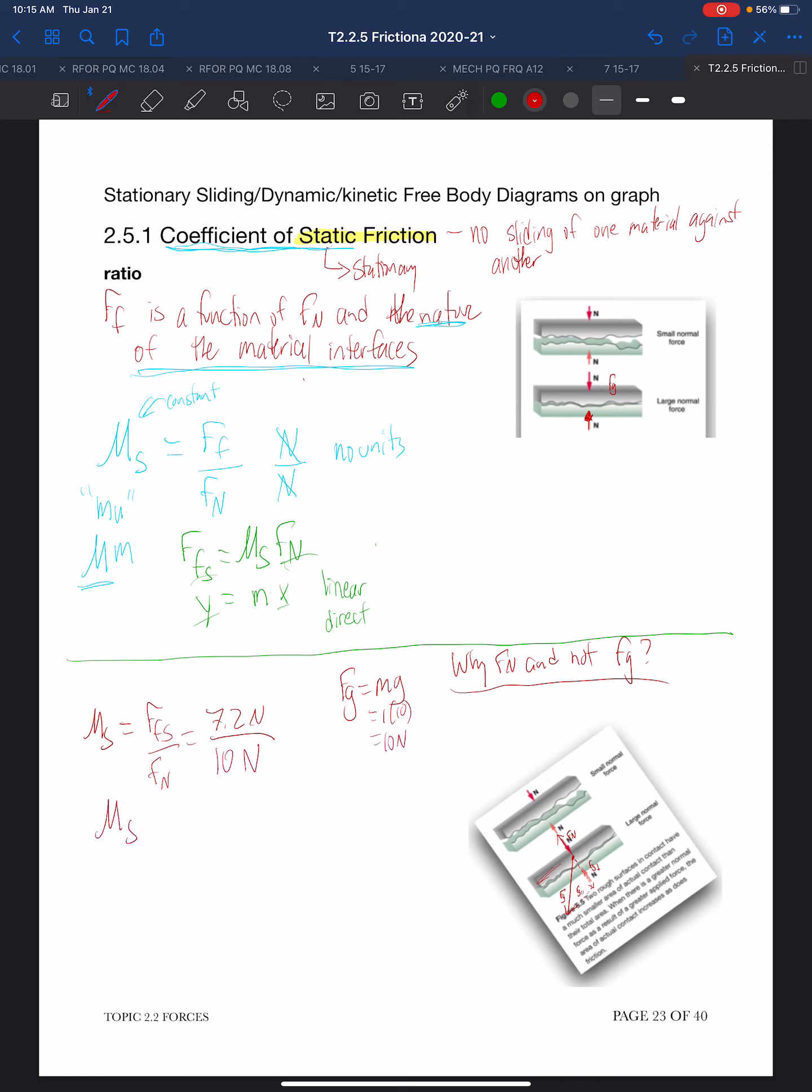So that gives us a mu sub s of 0.72. And again, the newtons cancel, so there's no dimensions on it. That's how we would get our mu s.